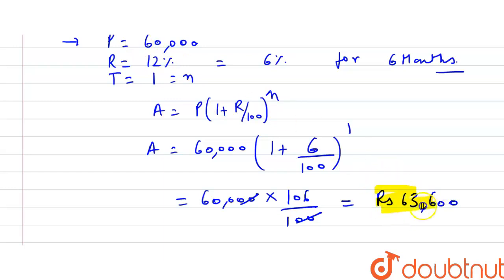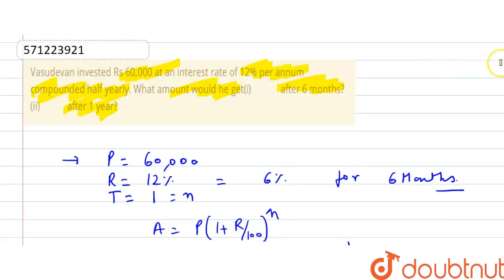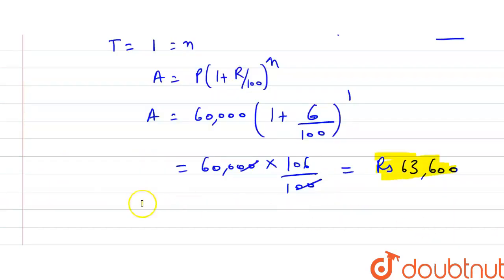six months, he will get the amount of rupees 63,600. Now in our second question, they have asked for calculation after one year. In the second question, principle remains the same: 60,000. Rate of interest remains the same.